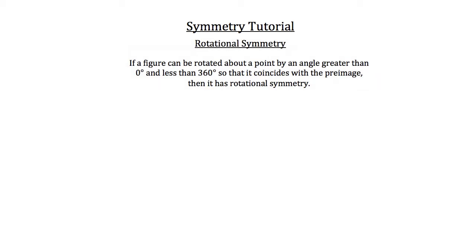The definition of rotational symmetry is if a figure can be rotated about a point by an angle greater than zero degrees and less than 360 degrees so that it coincides with the preimage, then it has rotational symmetry.